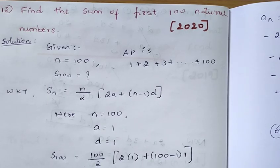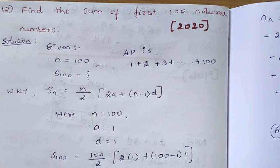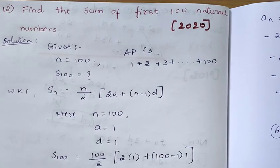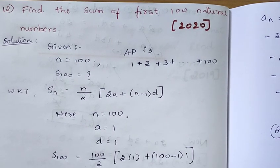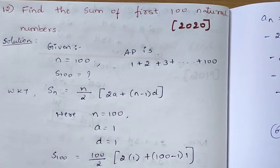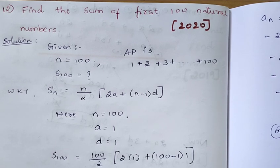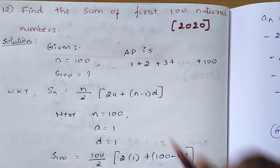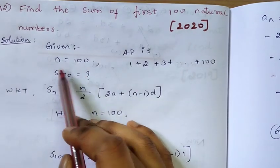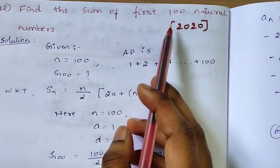Question 9 is a very simple 2-mark question: Find the sum of first 100 natural numbers. Very easy. The first 100 natural numbers are 1, 2, 3... and we need to find their total sum. So, the value of n will be 100 natural numbers.